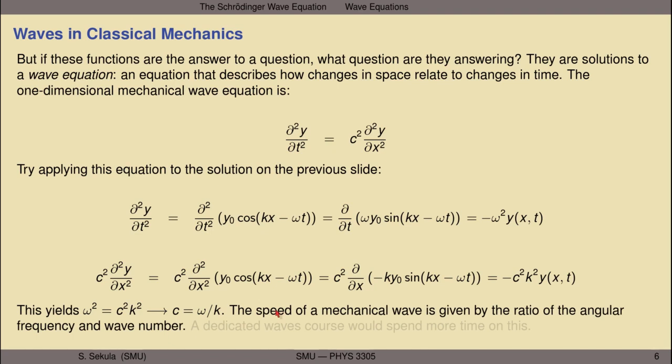This is a very quick tour of a solution to the wave equation, showing that it does solve the wave equation, and how plugging it in returns a relationship between frequency squared, speed squared, and wave number squared. A dedicated waves course would spend more time motivating the derivation of the wave equation from a simple model of a vibrating string, motivating how one sets up and solves that equation, and showing what relationships emerge. Here, I am merely trying to motivate some thought process about wave equations and the resulting relationships that can be derived from applying them to their solutions.